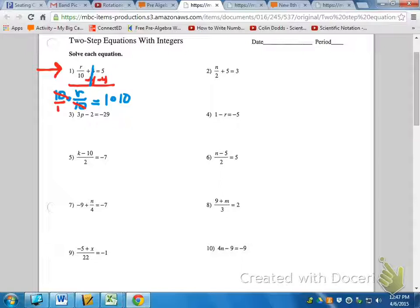That leaves me with R over 1 on the left, which I'm going to write just as R, equals 1 times 10 is 10. So R equals 10.